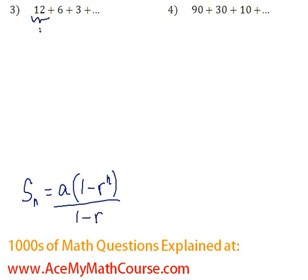Over here our a is 12 which is the first term. Our r will be half because that's 6 over 12, half.